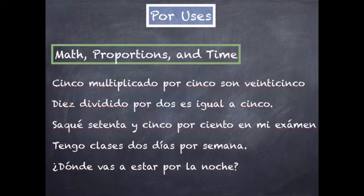A few more uses of por are to express math, proportions, and time. Cinco multiplicado por cinco son veinticinco — five times five are twenty-five. You can also just say cinco por cinco. Diez dividido por dos es igual a cinco — ten divided by two equals five; dividido por means 'divided by.' Saqué setenta y cinco por ciento en mi examen — I got seventy-five percent on my exam. Por ciento means percentage, literally 'of one hundred.'